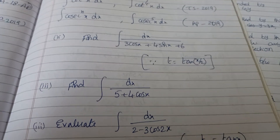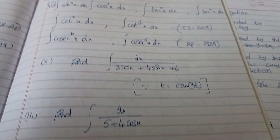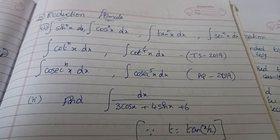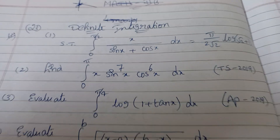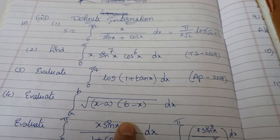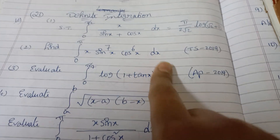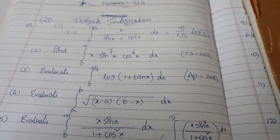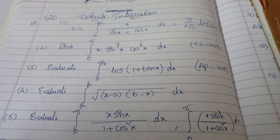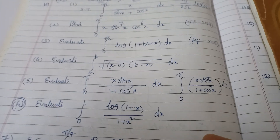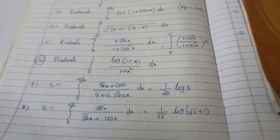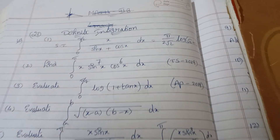Integration by parts is also there — prepare that too. In definite integration, 7A and 7C are there. The most important questions for seven marks — one seven-mark question will come. Understood? These are all seven-mark questions, but some may also come as four-mark questions. These are the most important in definite integration.